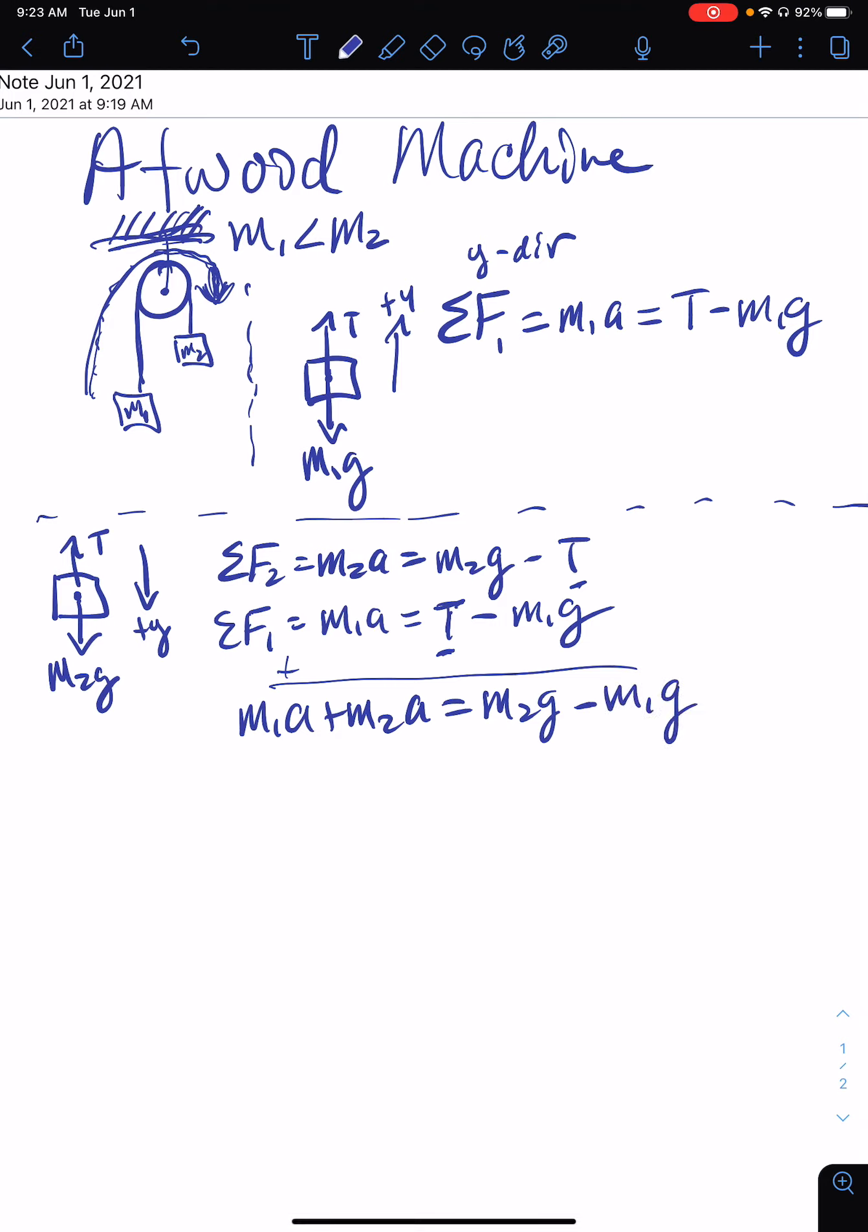So hopefully you can recognize this is the classic Atwood machine equation. I'm going to factor out a on the left and g on the right. So a times (m1 plus m2) equals g times (m2 minus m1).